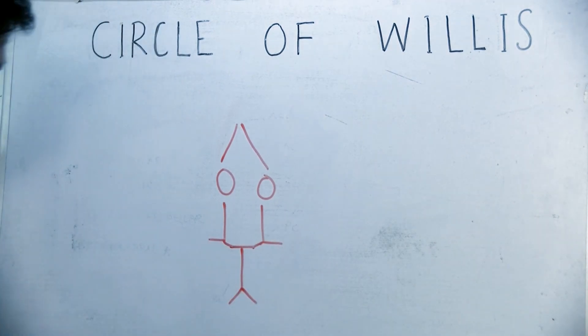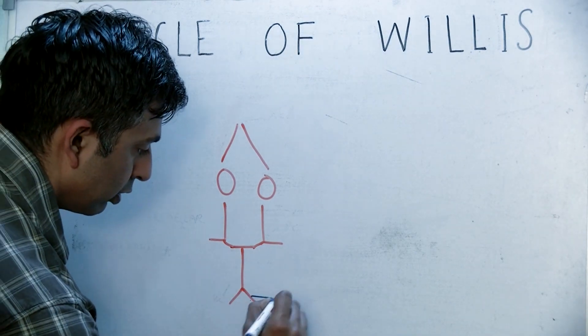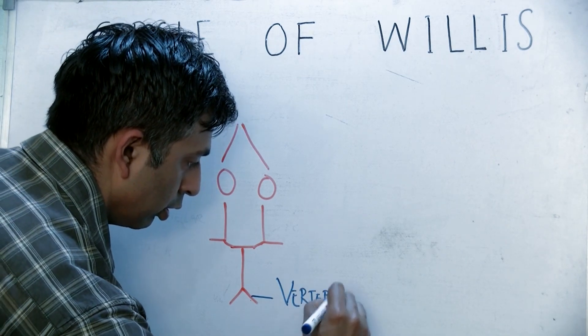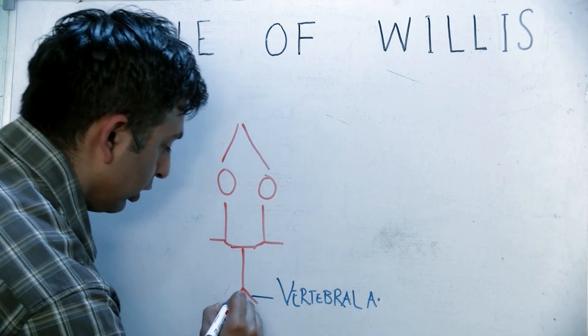And let me label things and make things easier. This is the vertebral artery on this side, and they together combine to form a basilar artery.